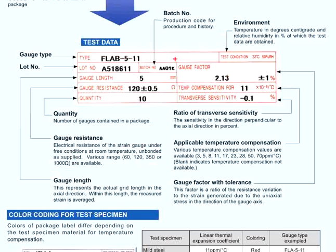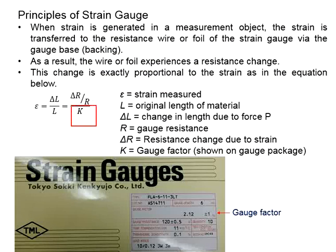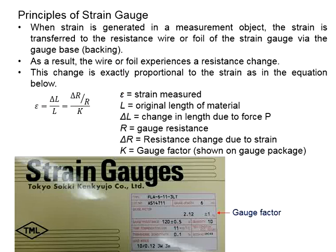Next, we have the gauge factor. This is the factor that you use to compute the strain as measured from the variations of the resistance detected by the strain gauge. The gauge factor correlates the changes in resistance against the changes in strain.